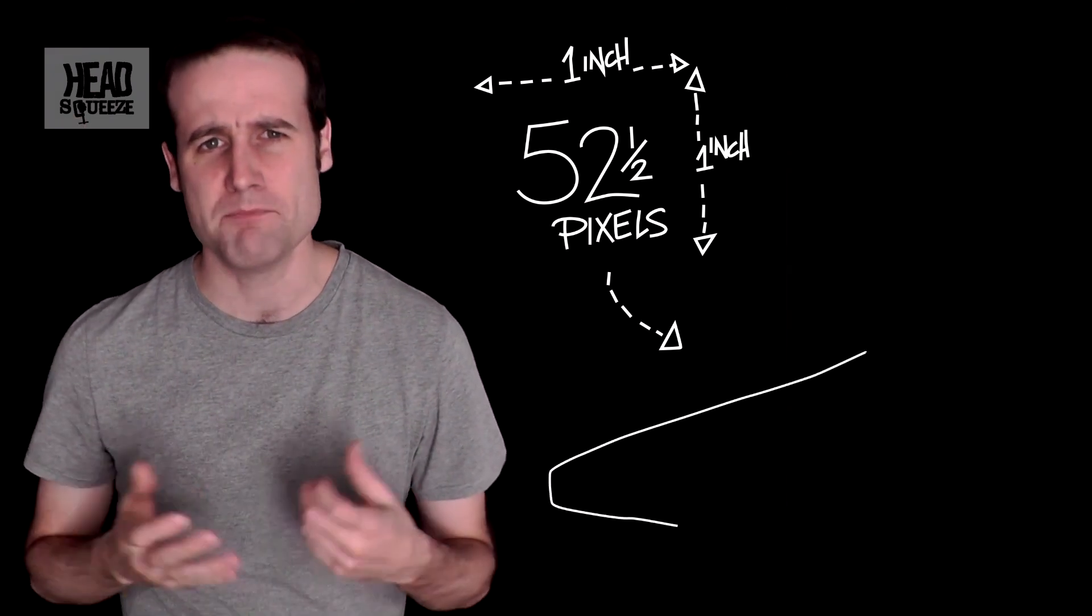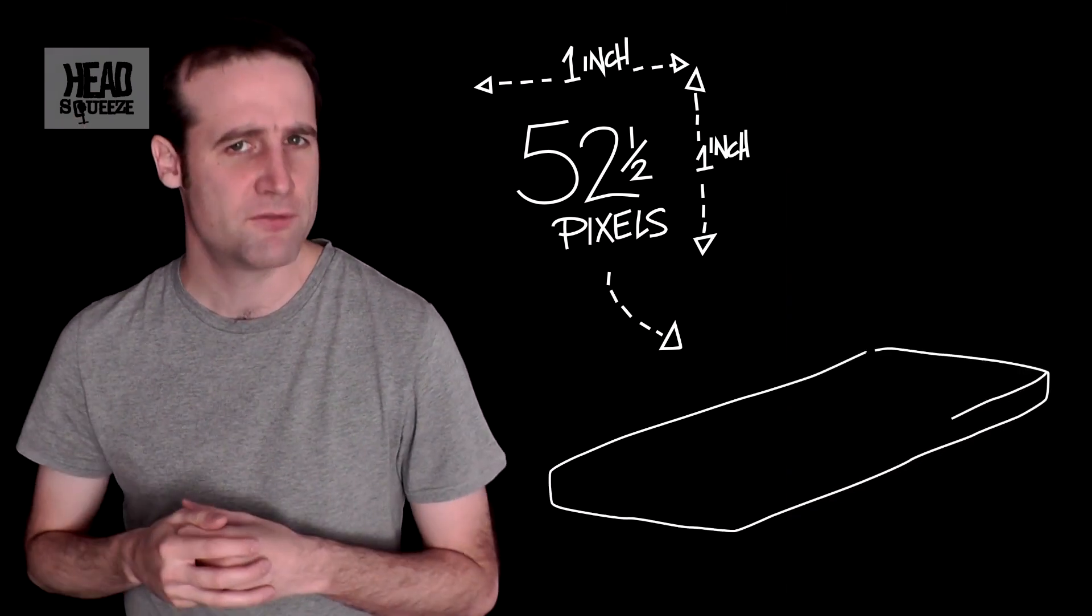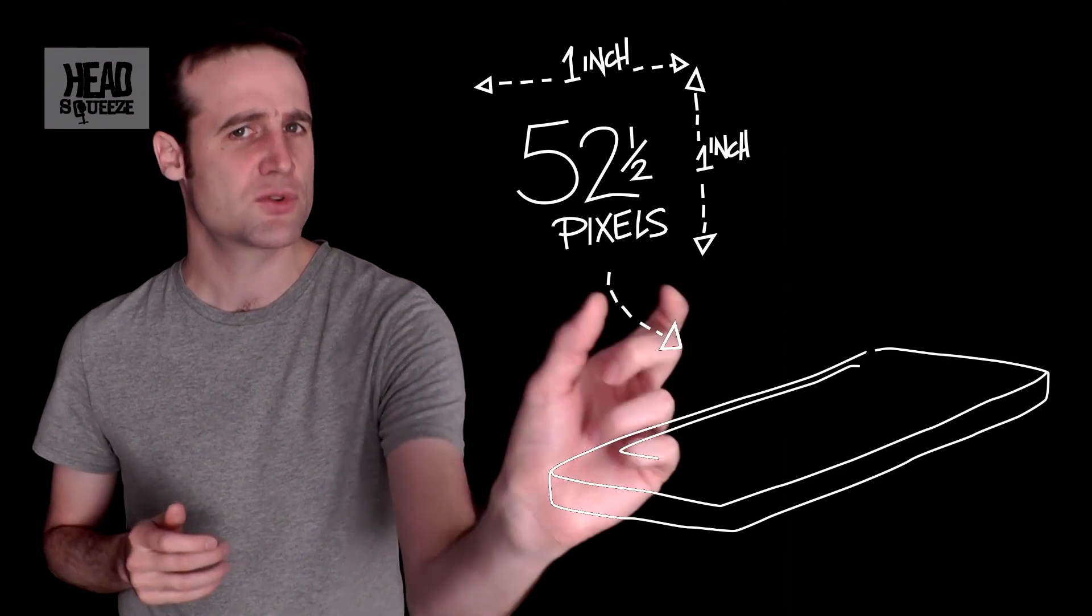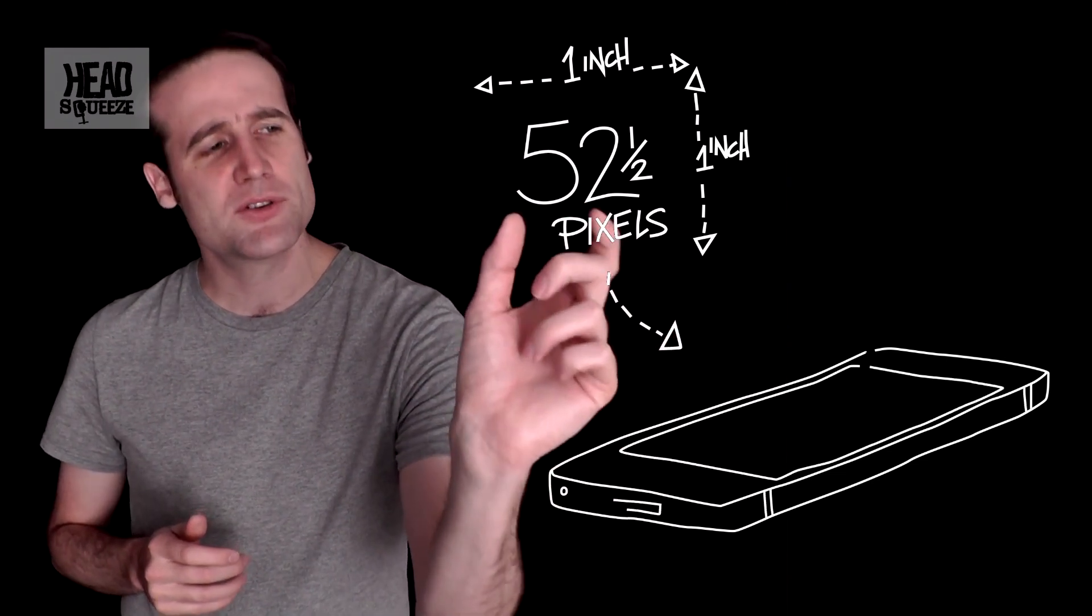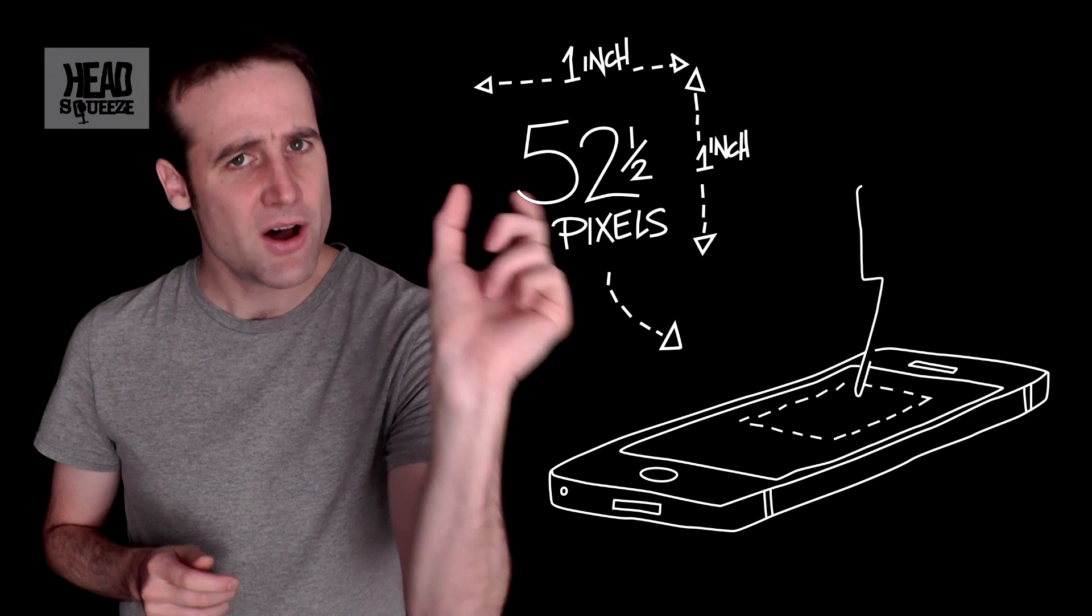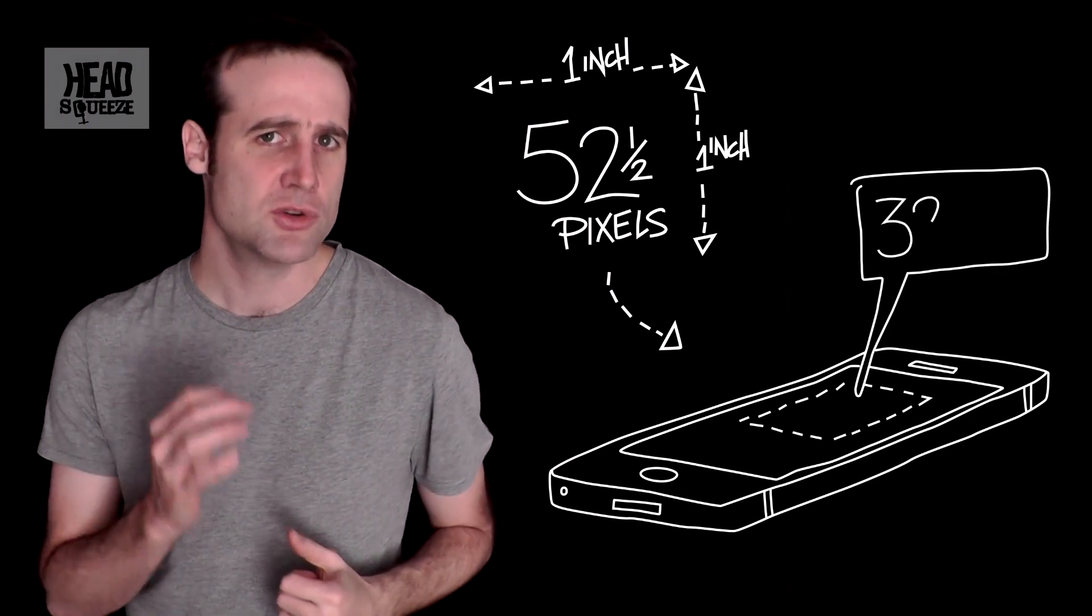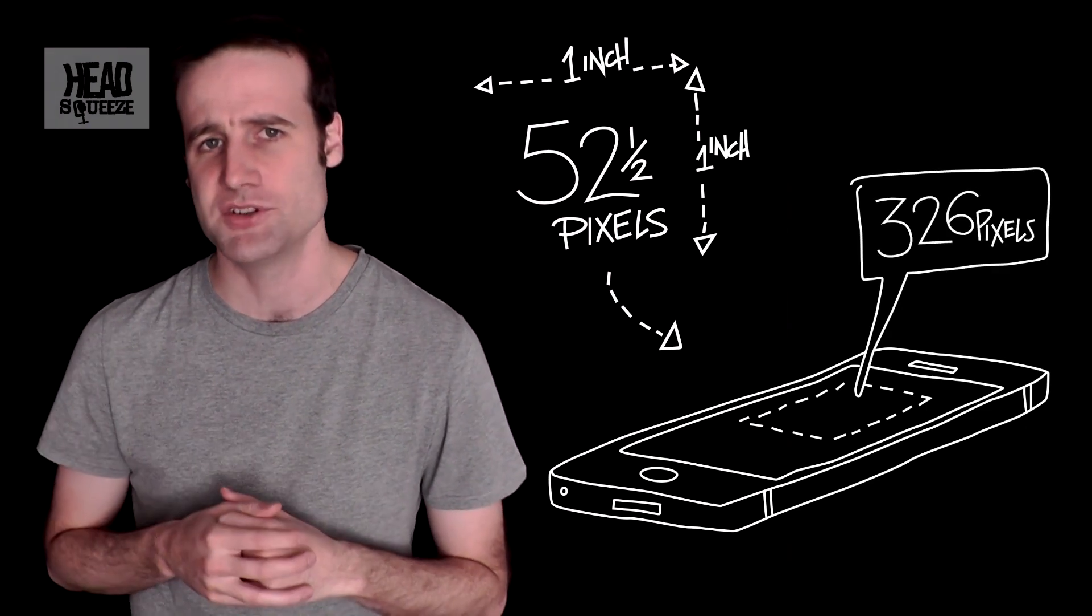Compared to a phone, it's even embarrassing. If you get the iPhone 5 for the same one inch of screen size, you're going to see 326 pixels. An iPhone has 6.2 times the pixel density of the LG television.